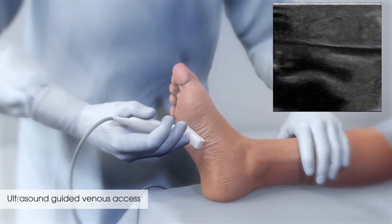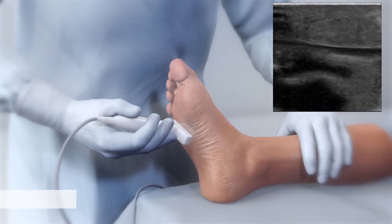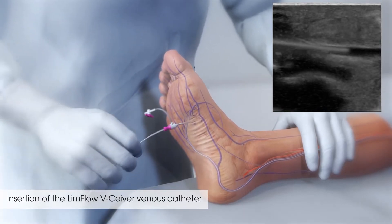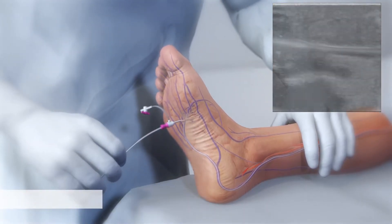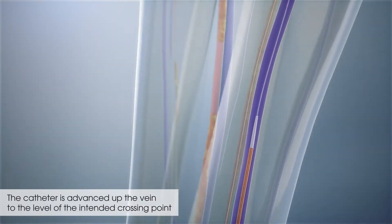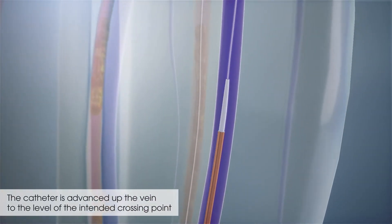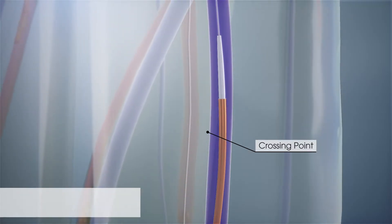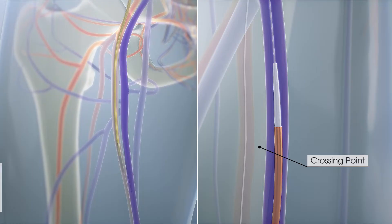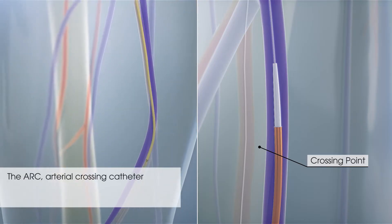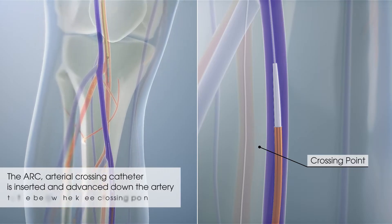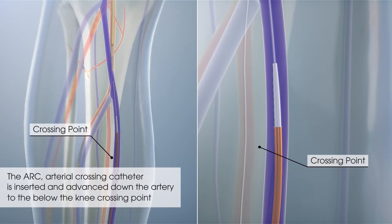Starting with ultrasound-guided venous access and insertion of the LimFlow V-Sever venous catheter through a vein on the bottom of the foot, the catheter is advanced up the vein to the level of the intended crossing point. After obtaining arterial access at the groin, the ARC arterial crossing catheter is inserted and advanced down the artery to the below-the-knee crossing point.